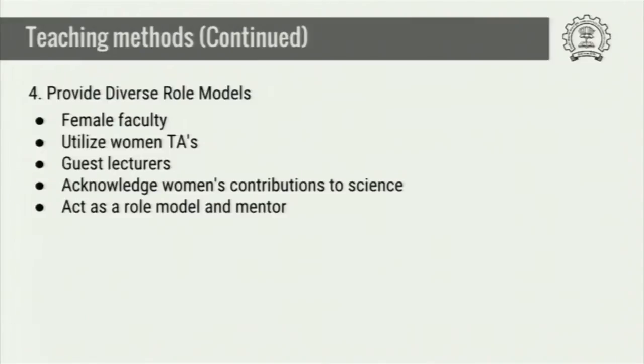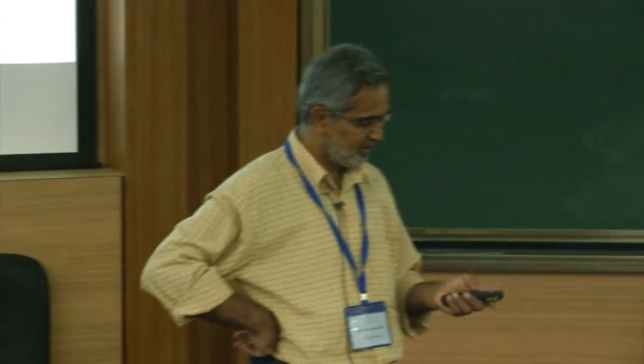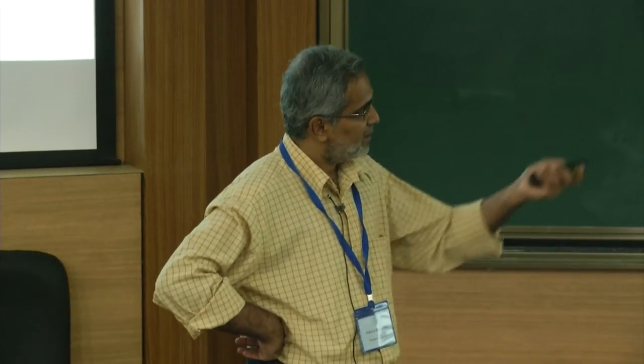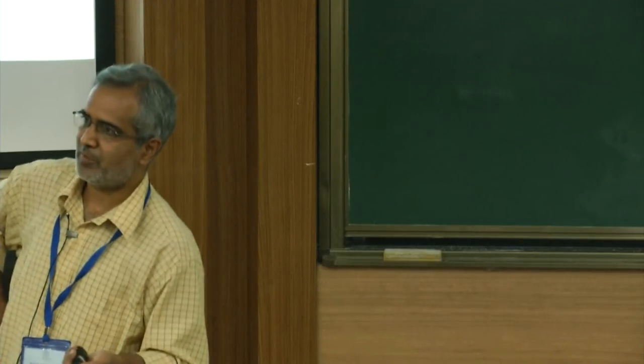Provide role models. I have visited a lot of engineering colleges and mostly they have pictures of only male scientists hanging in all the classrooms, libraries, and computer rooms. Try to increase the proportion of women faculty, or if you don't have that, at least invite guest lecturers so that students understand that women are also a significant part of science — and acknowledge women's contributions to science using these role models. There are plenty of them in India itself. Make sure your language is gender sensitive. Use examples all students can empathize with — if you always use examples only relating to the military, weapons, or high technology like mission Mars, not everybody will be interested.